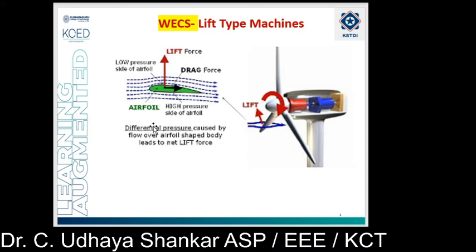The blade is essentially an airfoil. When air flows past the blade, a wind speed and pressure differential is created between the upper and lower blade surfaces. The pressure at the lower blade surface is greater and thus it acts to lift the blade. When blades are attached to the central axis like a wind turbine rotor, the lift is translated into rotational motion. Lift powered wind turbines have much higher efficiency than drag type machines and therefore are well suited for electric power generation.